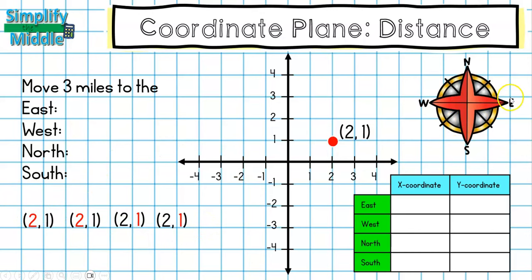If I go to the east, east is this direction. As I'm going this direction with my point, I notice that my numbers for my x-value are getting bigger, but nothing is happening to the 1. So to go east, I'm going to add that 3, and I'm going to keep my y-coordinate the same. So my new point, if I was moving from (2, 1) to the east 3 miles, would be (5, 1).